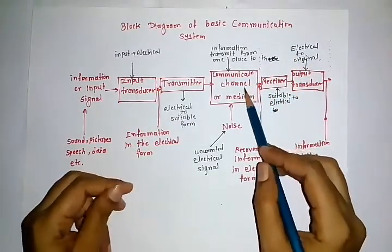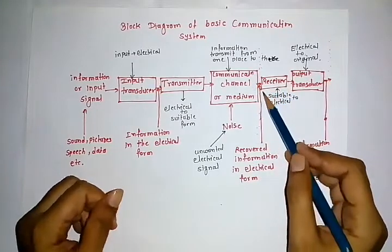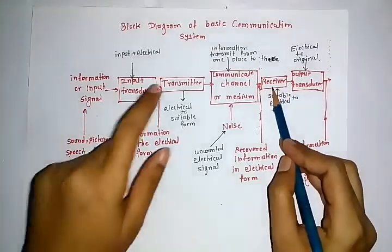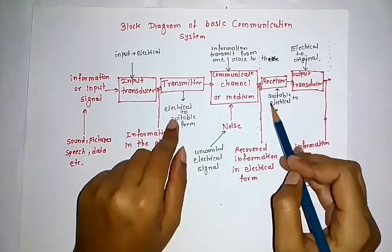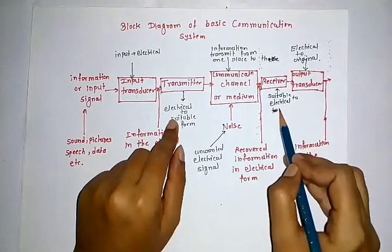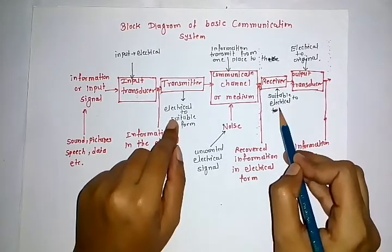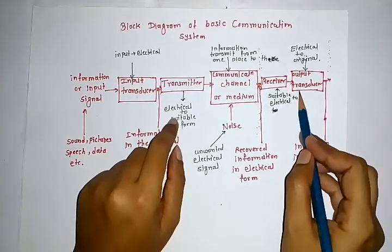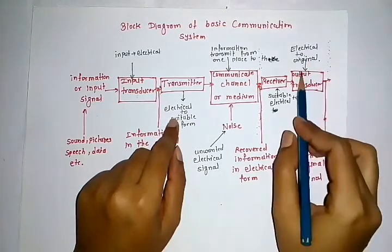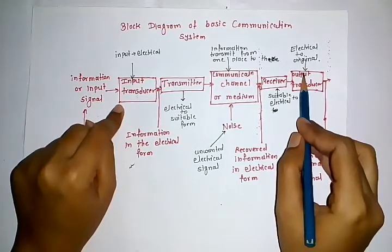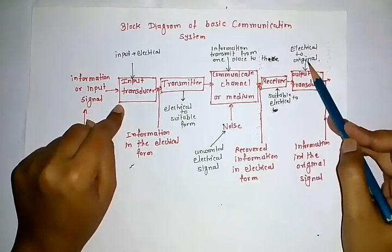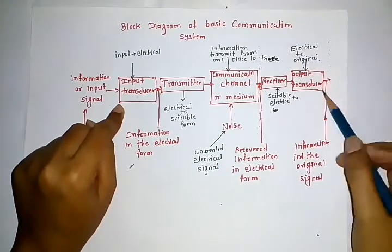The suitable information is then given to the receiver. The function of the receiver is exactly opposite to the transmitter — it converts the suitable form information back into an electrical signal. This electrical signal is then given to the output transducer.